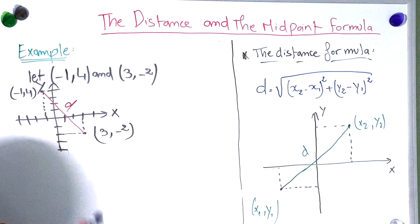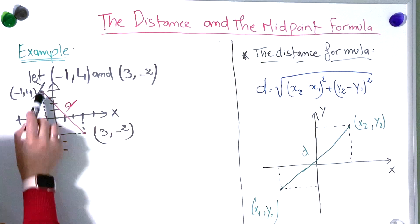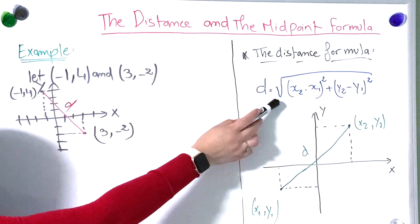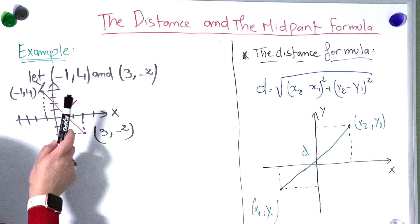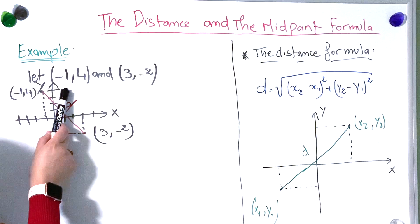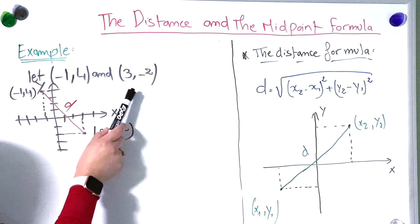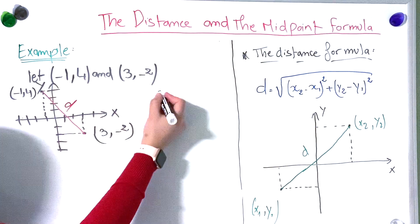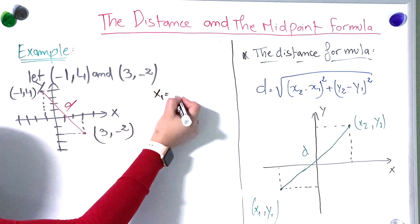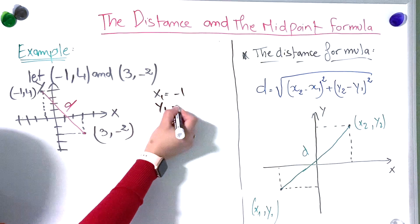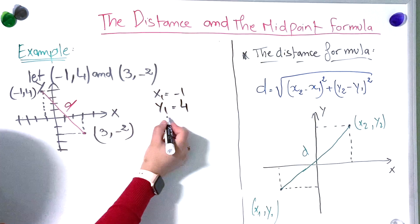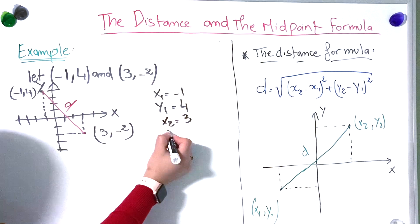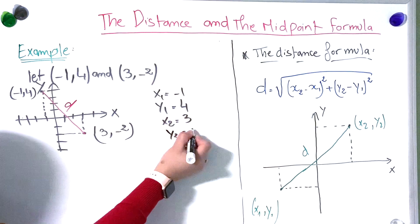Now to find the distance between these two points, we plug the numbers into the formula. First, let's choose which is x1, y1 and which is x2, y2. It doesn't matter which one you choose — either way is correct. So I'll take x1 = −1, y1 = 4, x2 = 3, and y2 = −2.